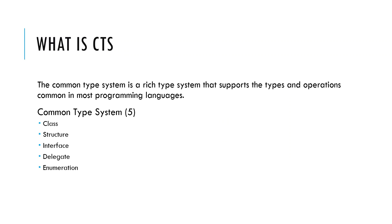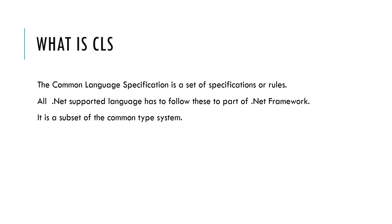What is the CTS? The Common Type System is a rich type system that supports the types and operations common in most programming languages. The common type systems include class, structure, interface, delegate, and enumeration. What is the CLS? The Common Language Specification is a set of rules or specifications which all .NET supported languages must follow to be part of the .NET Framework. It is a subset of the Common Type System.